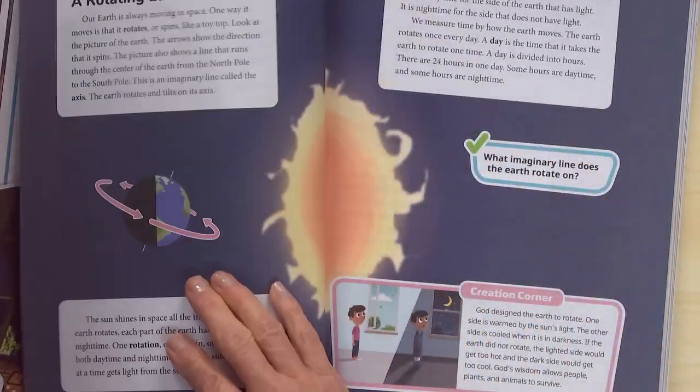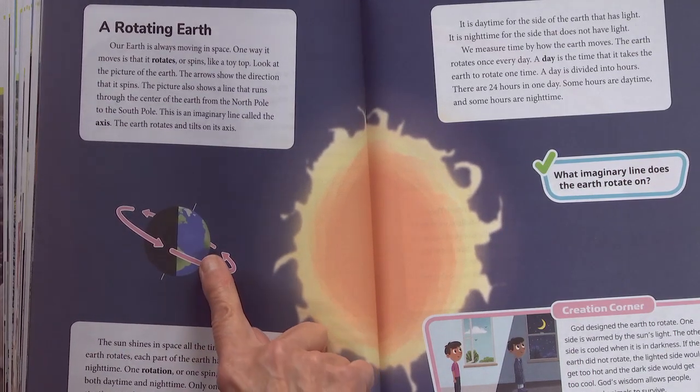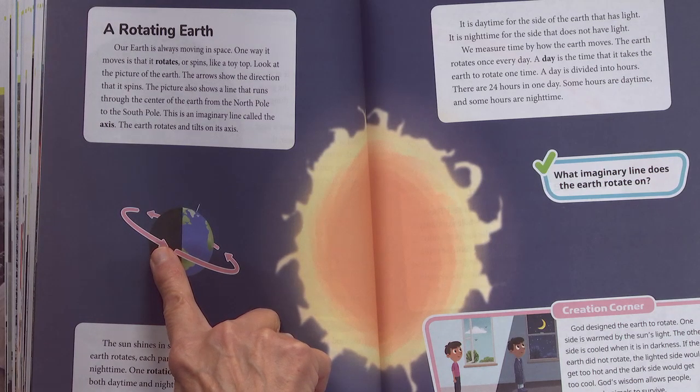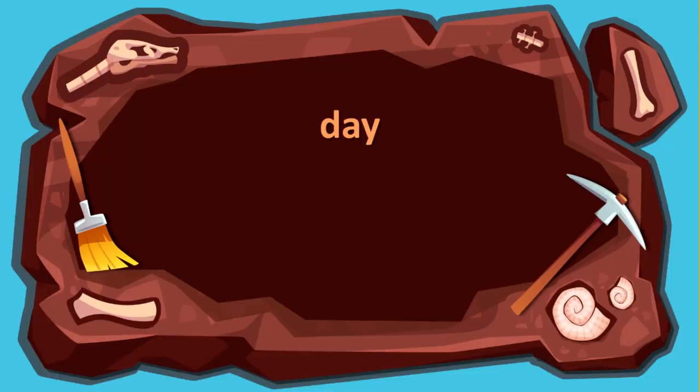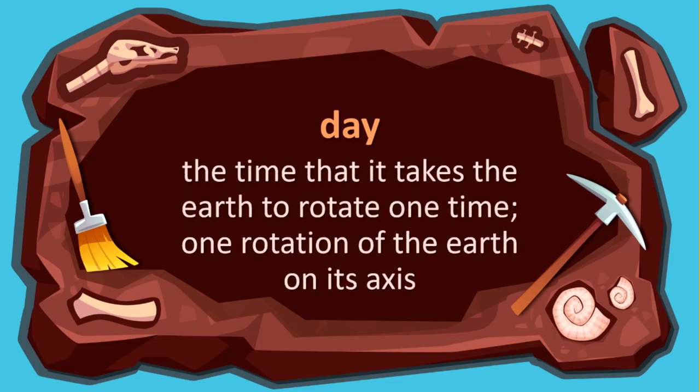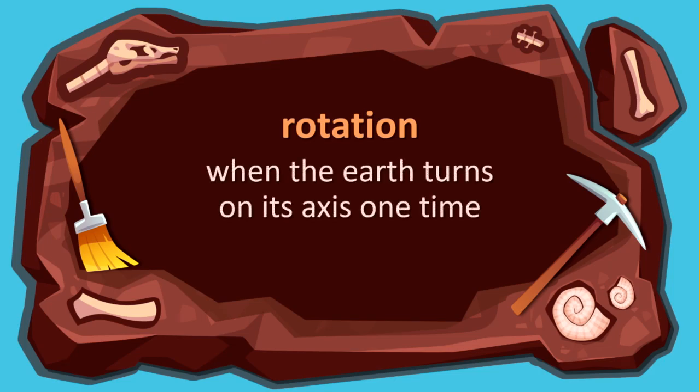Look at page 86. Why is part of the Earth light and the other part dark? It is showing daytime and nighttime. What does day mean? Day is the time that it takes the Earth to rotate one time — one rotation of the Earth on its axis. What does the word rotation mean? Rotation is when the Earth turns on its axis one time. So how many hours are there in one day? There are 24 hours in one day.